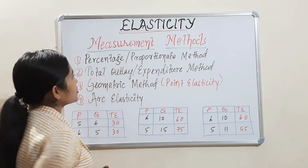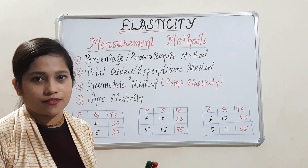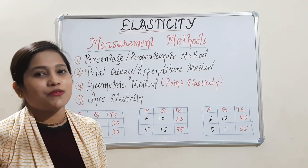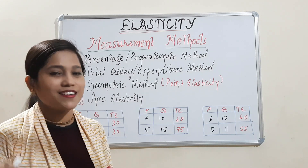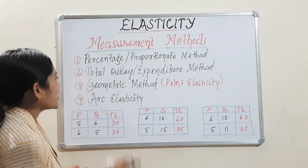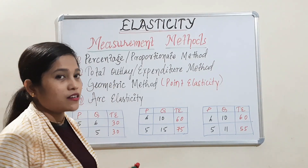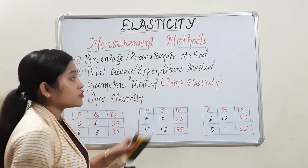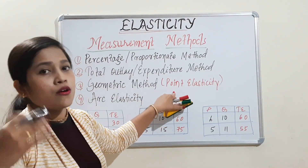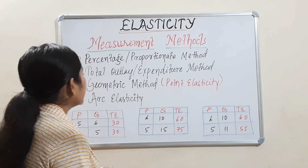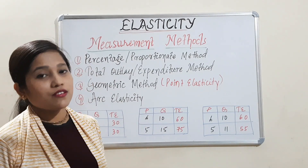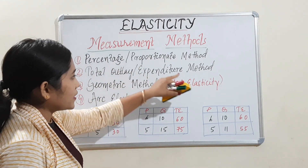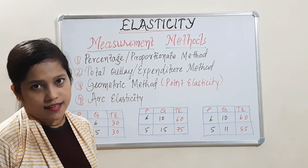The first one is the proportionate method and percentage method, which we have already covered in the first lecture. If you have not seen that lecture, you can get it easily through the description box because I have mentioned the link there. Next is the total outlay and expenditure method, which we will cover in this lecture. The next two methods are the geometric method, which we otherwise call point elasticity, and the last one is arc elasticity.